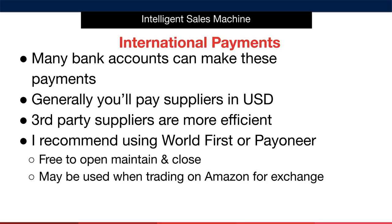Your World First account can be used when trading on Amazon for currency exchange. In other words, if your bank account is a sterling bank account in the UK, but Amazon are paying you euro from your German sales, you can have Amazon send that euro payment to your World First euro account and complete the exchange back to sterling there. This will save you money as Amazon charge more for their currency exchange than World First.